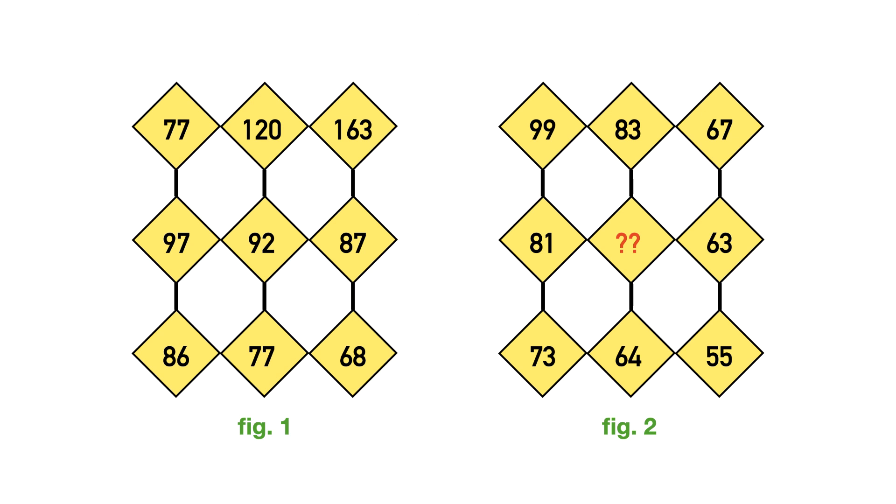In the third row, 86 plus 68 equals 154, divided by 2 equals 77, which is the second number.